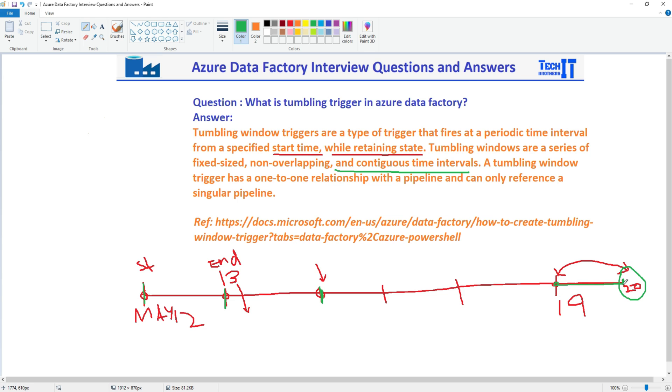Because if you relate this to multiple pipelines, then once it's run for one, it cannot keep that state. So tumbling trigger is only specific with one pipeline and will be referenced by the single pipeline because it needs to track the time.